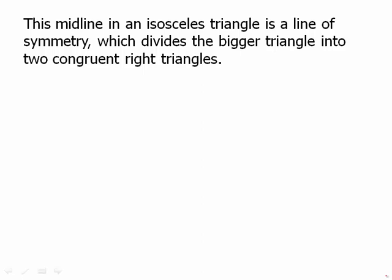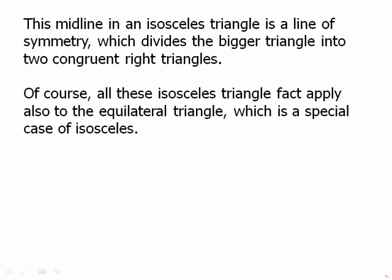The midline of an isosceles triangle is a line of symmetry, which divides the bigger triangle into two congruent right triangles. Of course, all these isosceles triangle facts apply also to the equilateral triangle, which is a special case of isosceles.